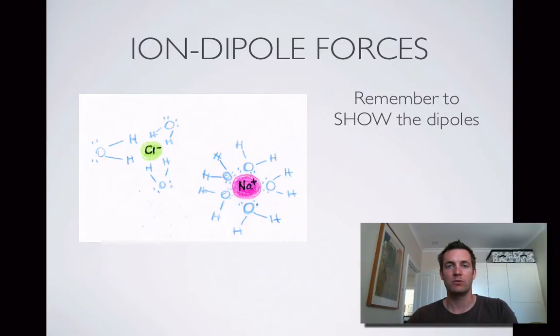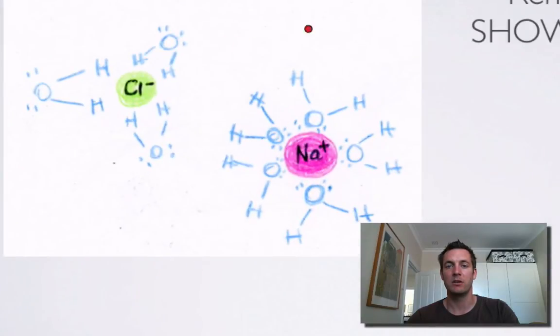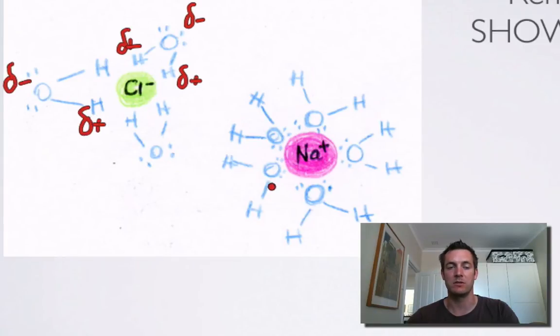What we ought to try and do when we're drawing one of these diagrams is not only to try and make sure that the molecules are pointing the right way, but also to show the dipoles on the molecules. Now remember, ions don't have dipoles. Dipoles are uneven distributions of charge, so if you remember in a water molecule there's a slightly positive end and there's a slightly negative end, because of the electronegativity difference between oxygen and hydrogen. So every oxygen will be slightly negative and every hydrogen will be slightly positive.